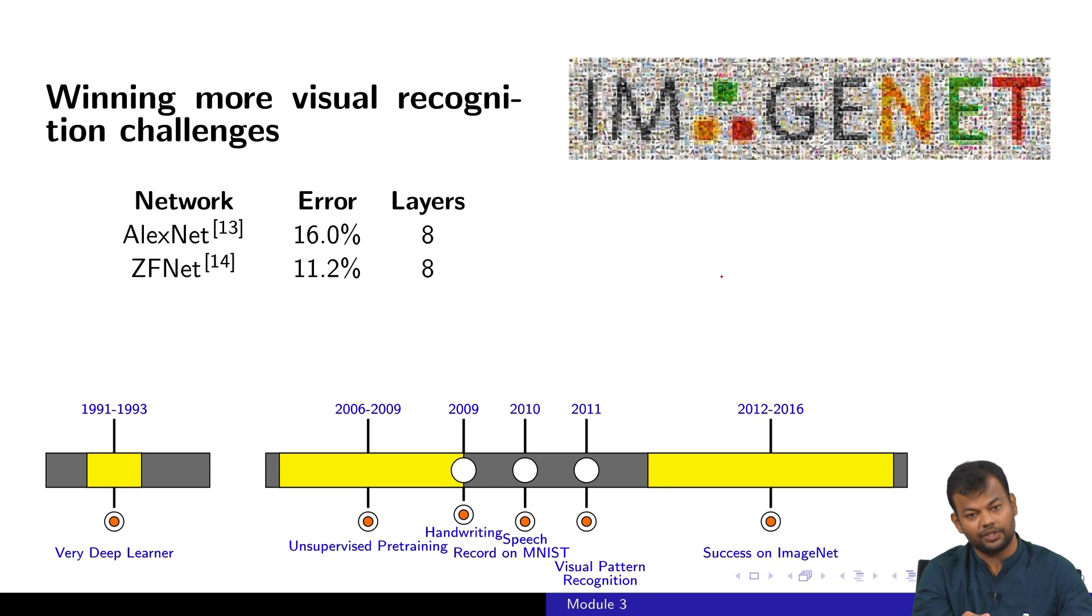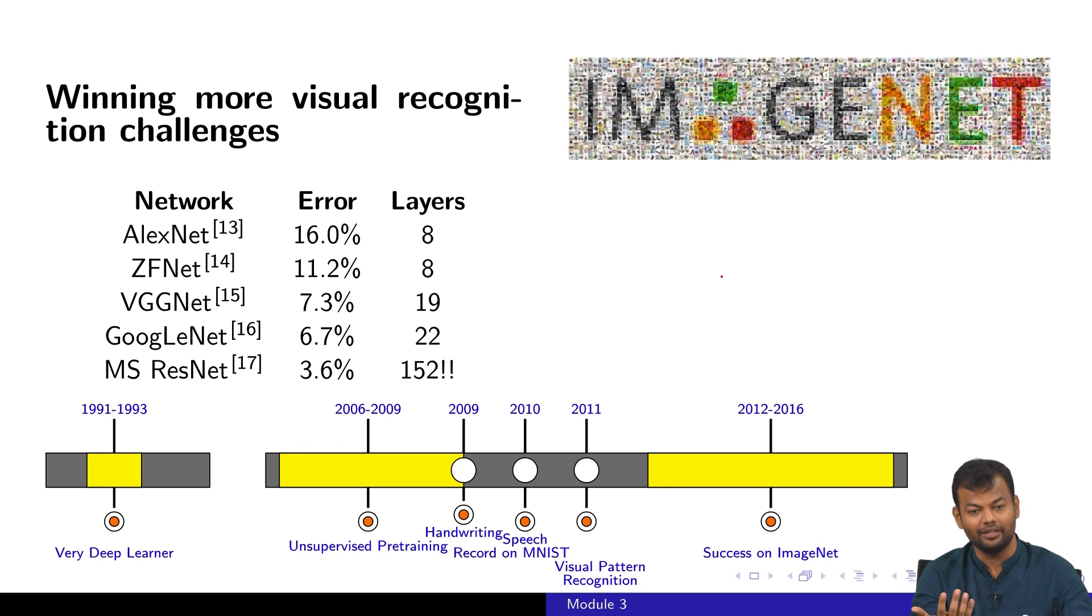The next year this was improved further and something known as ZFNet was proposed which was again 8 layers, but it did better than AlexNet. The next year even a deeper network with 19 layers was proposed which did significantly better than AlexNet. Then Google entered the scene and they proposed something which is 22 layers and again reduced the error. Then Microsoft joined in and they proposed something which had 152 layers and the error that you see here is actually better than what humans do.